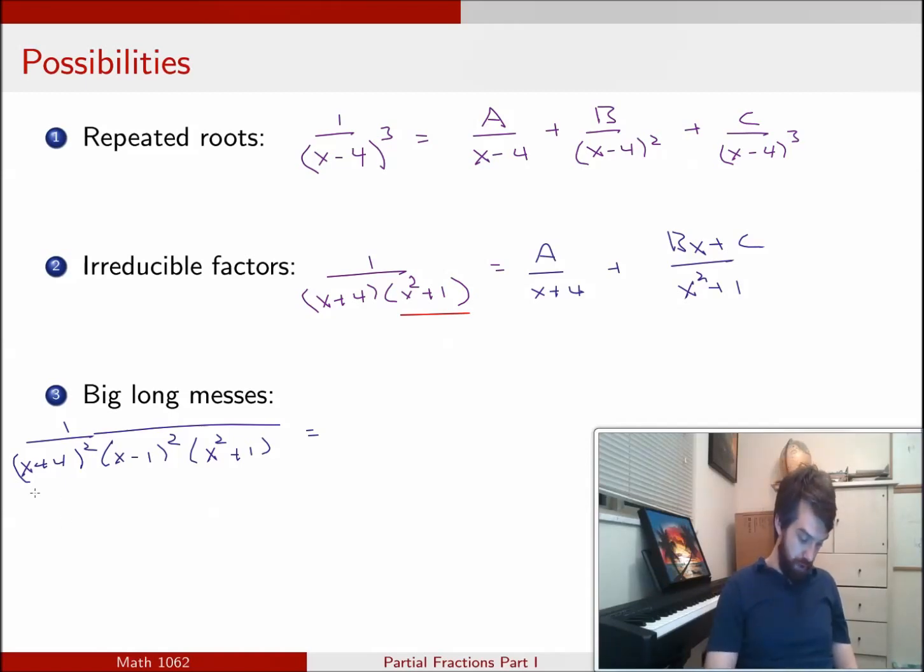I look, okay, I'm going to do my first one first. x plus 4 squared. Well, this is something which is a repeated case. It's the repeated root case. So this is going to be an A over x plus 4, and a B over x plus 4 squared. That's how I deal with situations that are repeated.